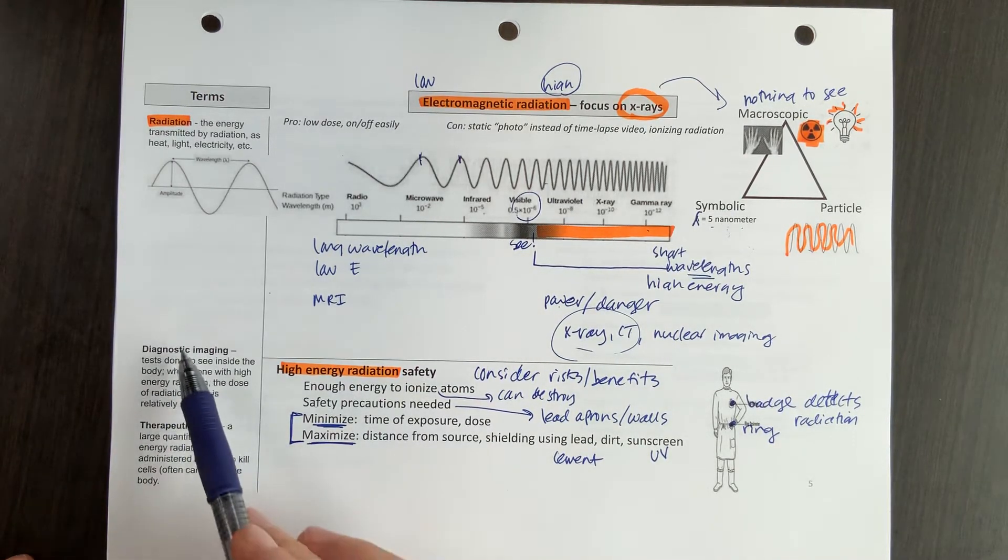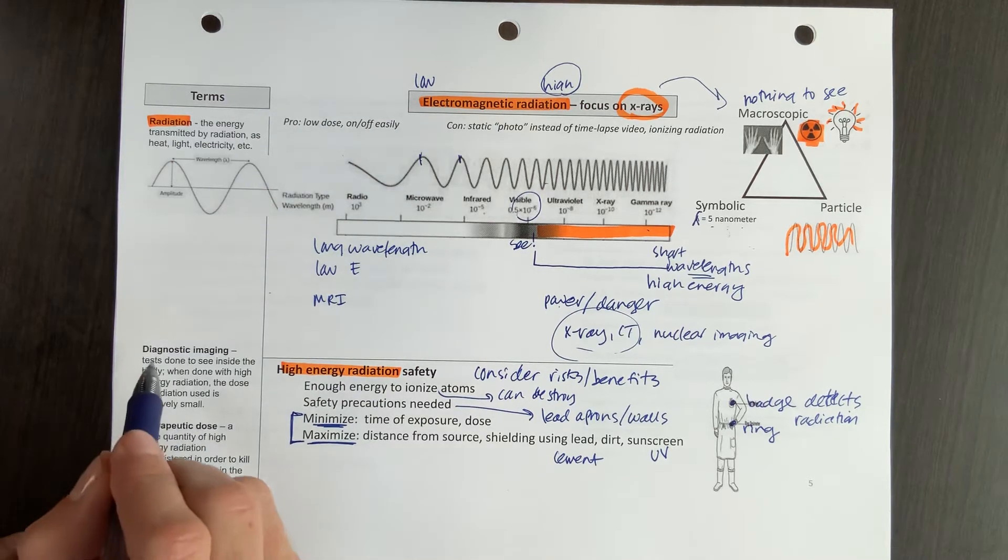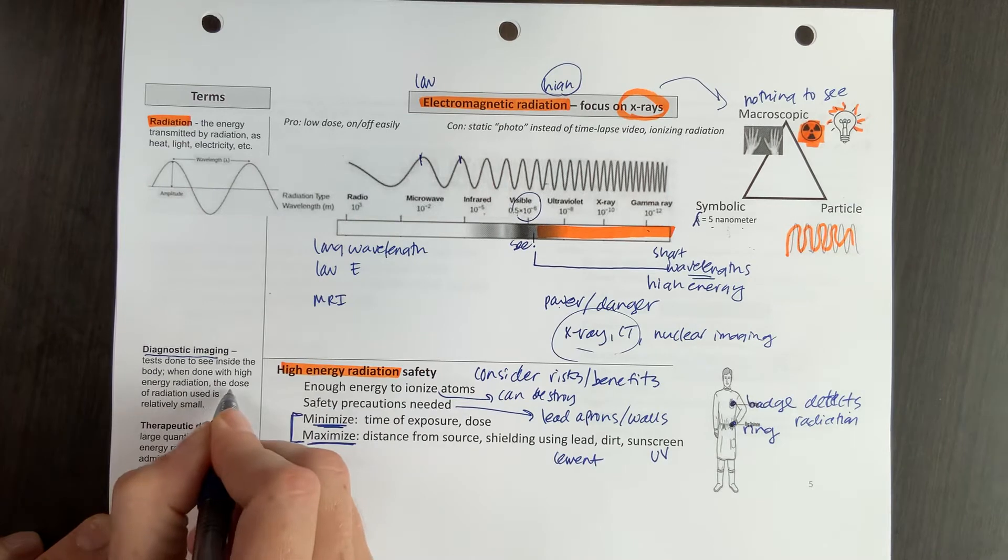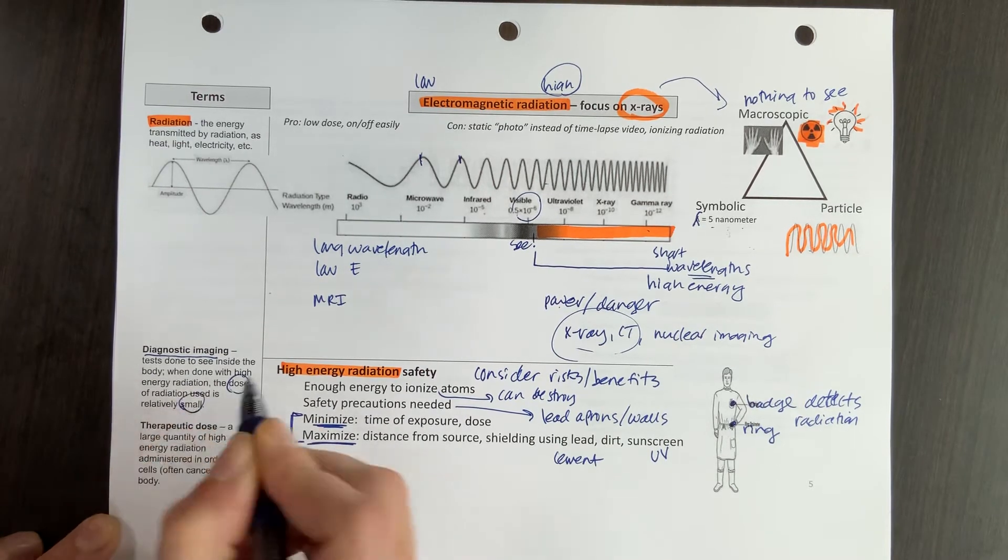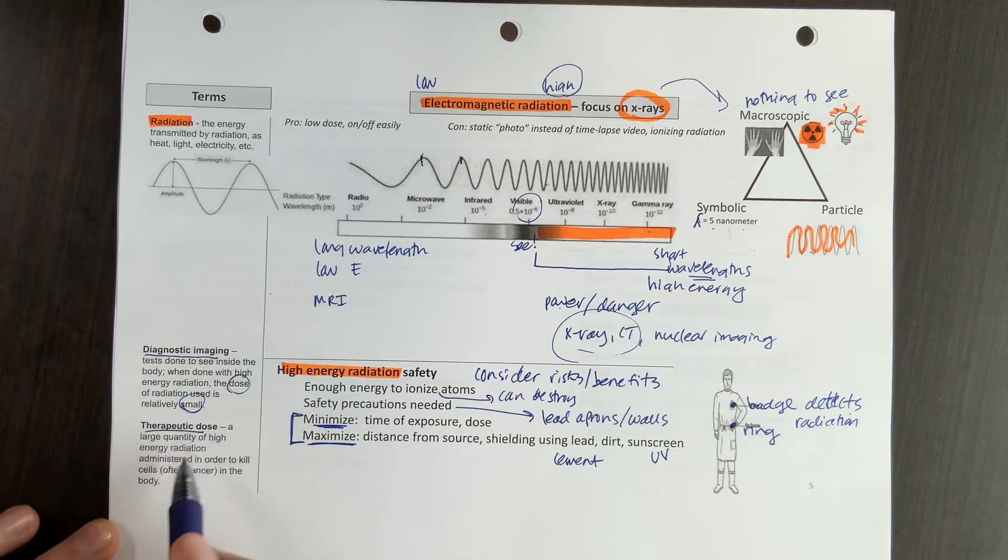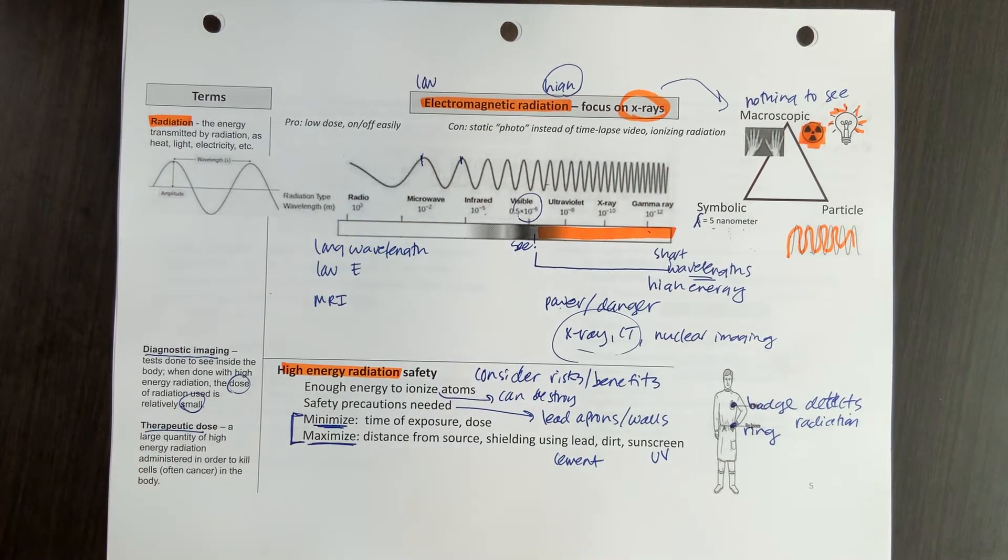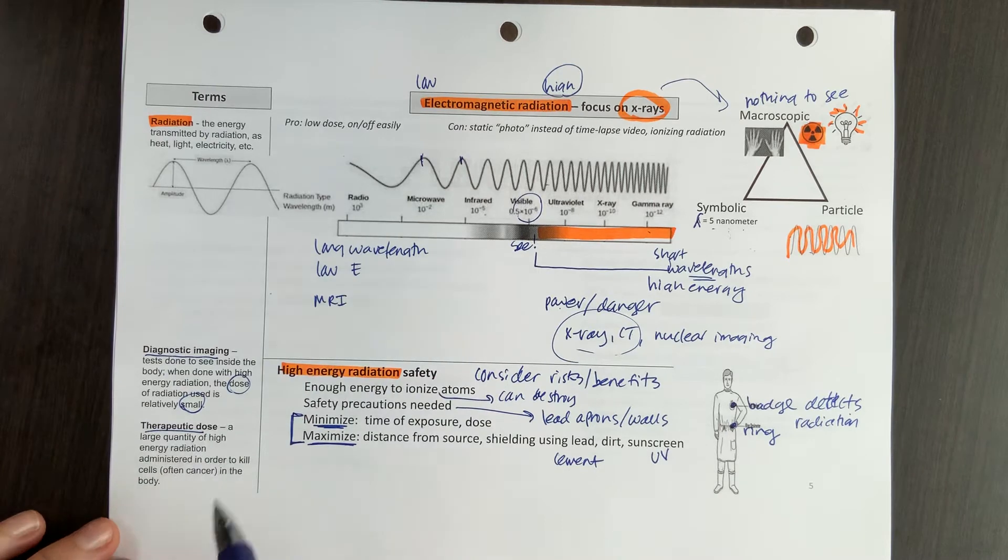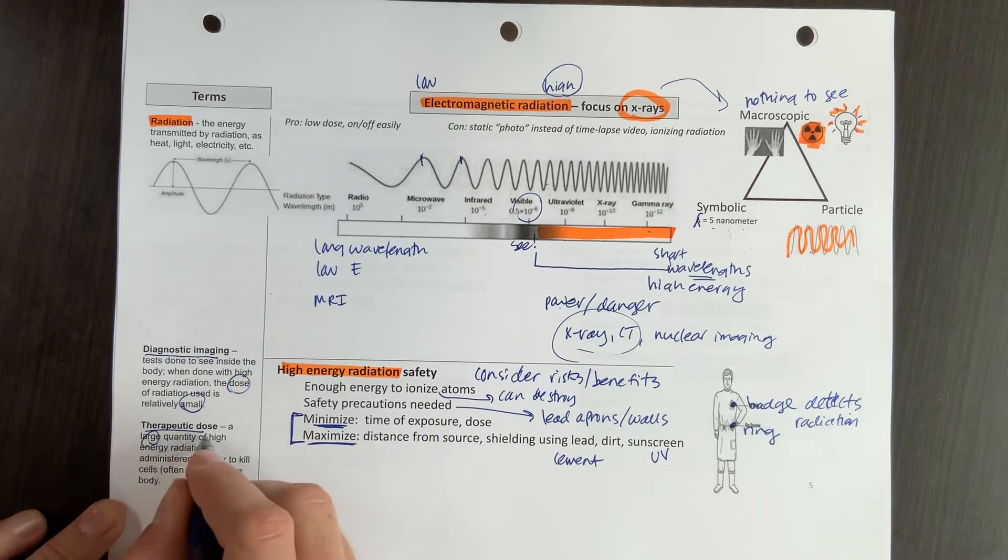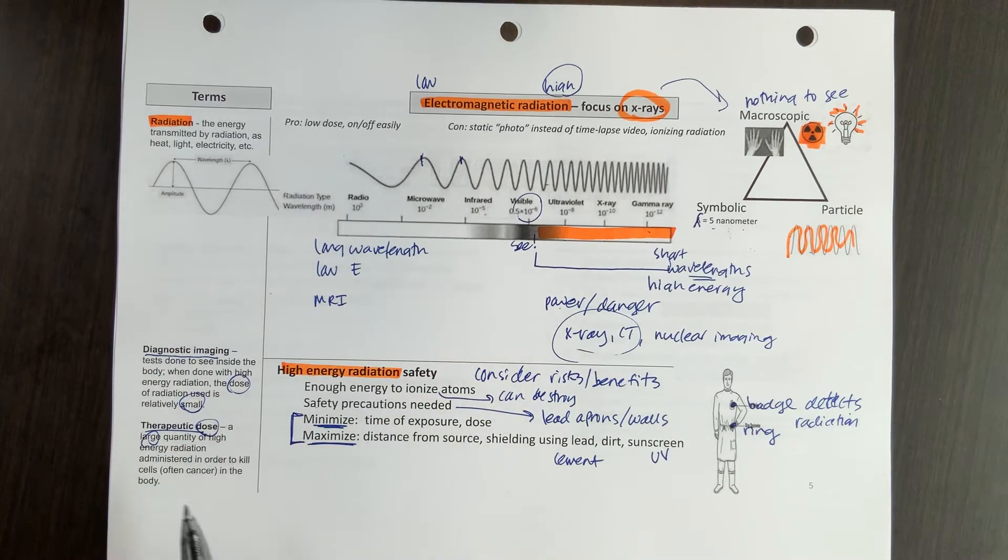In terms of dose, just a couple terms to be familiar with over here. Diagnostic imaging is going to be where you use a relatively small dose, just to see what's going on with your thyroid. Therapeutic doses are going to be where you use a large quantity of that high-energy radiation, and that's going to be there to kill cells. And so this is going to be a relatively large dose, and that might be if you want to kill thyroid cells if you've got cancerous cells there. So just be able to use those two vocabulary words.